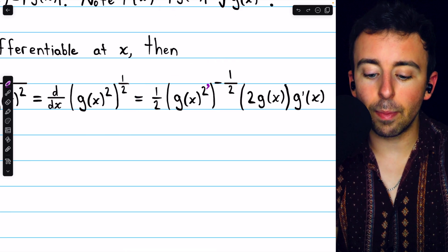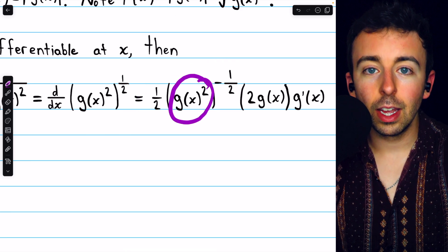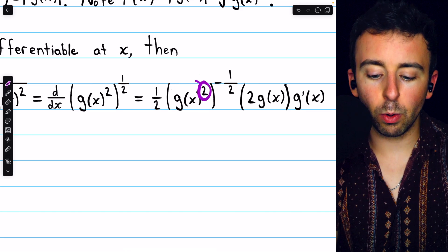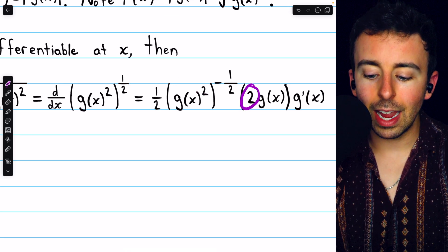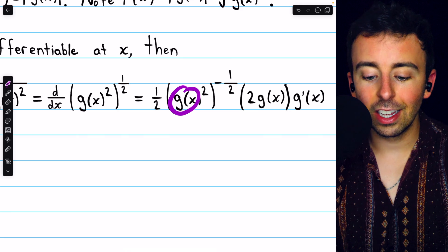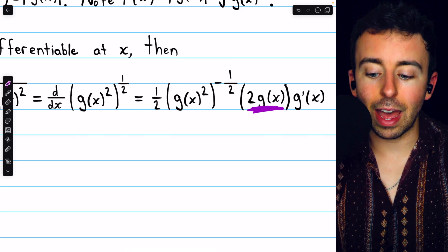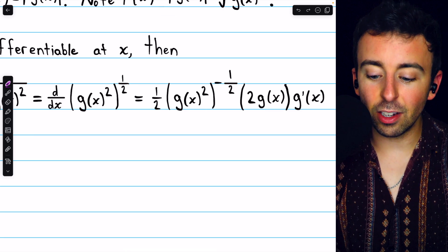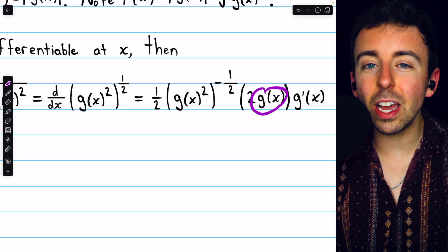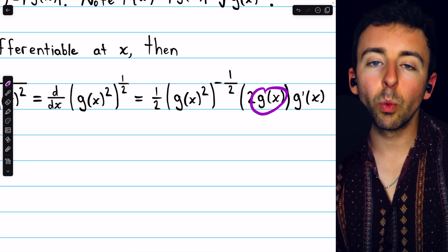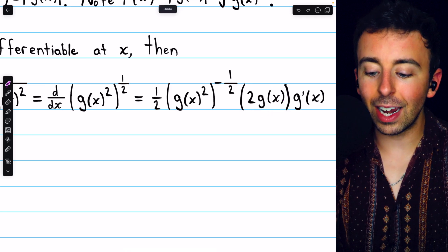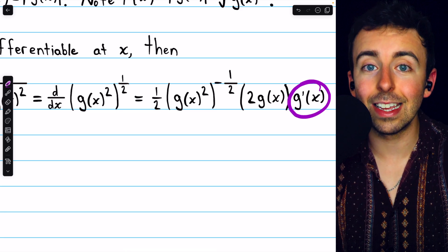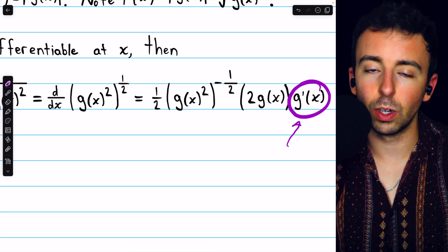Then we multiply by the derivative of the inside function. To take the derivative of g of x squared, we bring that power of two out front as a factor, don't change the inside function, so it's two times g of x — g of x now has a power of one because we subtracted one from the power of two. Since g of x is itself a function, we also have to multiply by its derivative. We're applying the chain rule twice here, so finally we multiply by g prime of x. This is why it was important that we assumed g is differentiable at x — otherwise that would not make any sense.